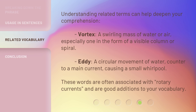Understanding related terms can help deepen your comprehension. Vortex: a swirling mass of water or air, especially one in the form of a visible column or spiral. Eddy: a circular movement of water, counter to a main current, causing a small whirlpool. These words are often associated with Rotary Currents and are good additions to your vocabulary.